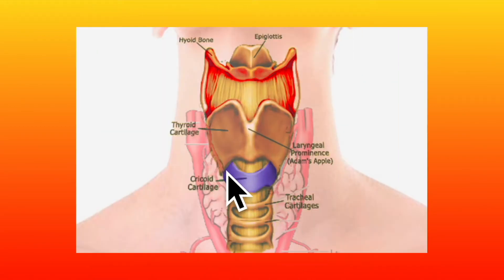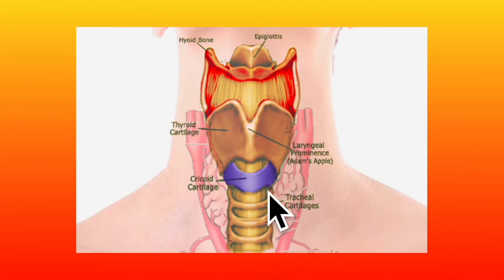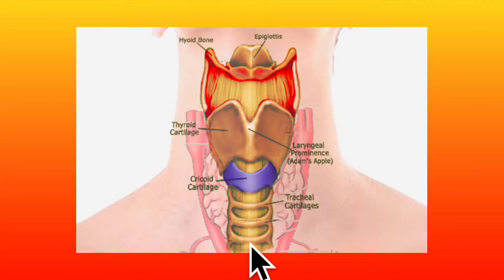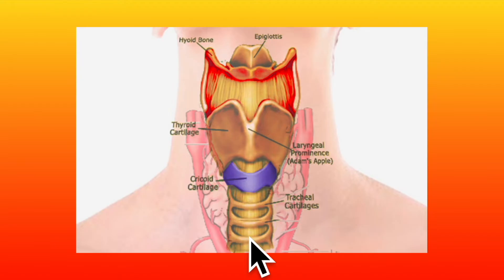In this diagram we can see the thyroid cartilage, the cricoid cartilage, and the tracheal cartilages. The trachea begins at the lower border of the cricoid cartilage, opposite the lower border of the 6th cervical vertebra. It runs downwards and slightly backwards in front of the esophagus, follows the curvature of the spine, and enters the thorax in the median plane.